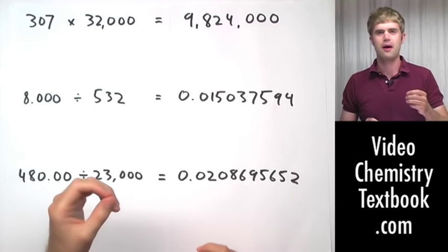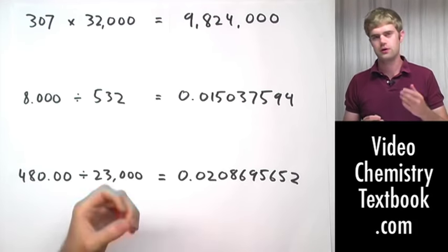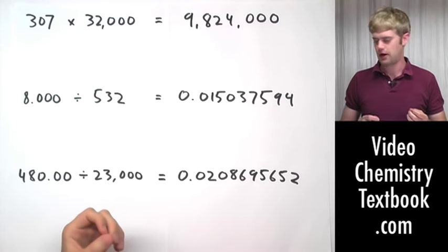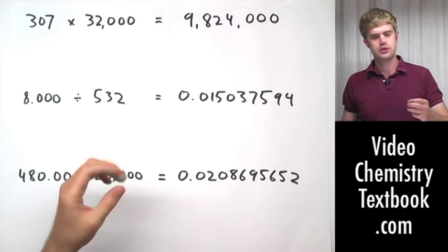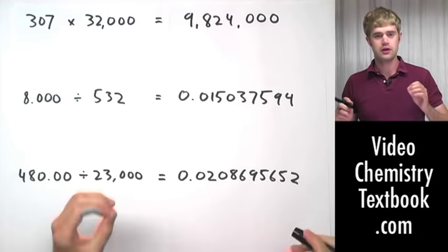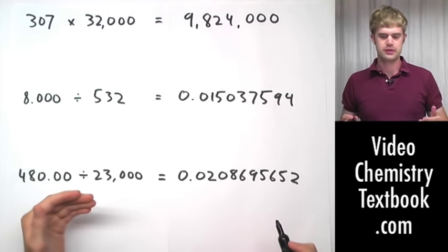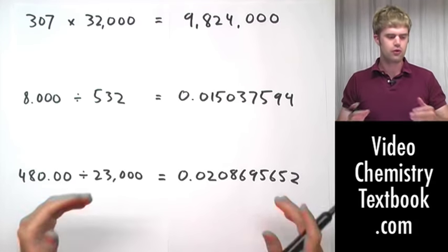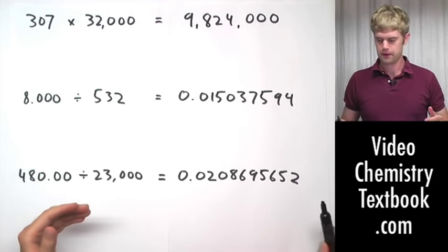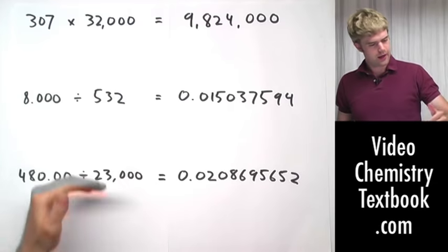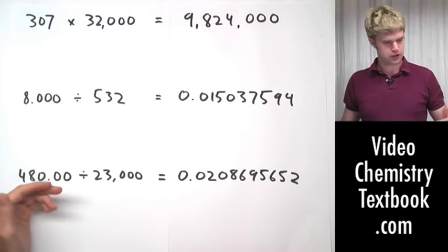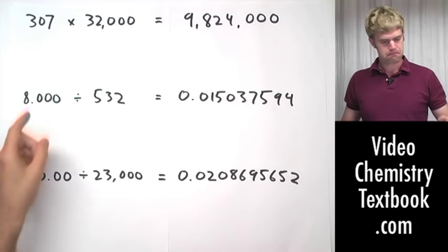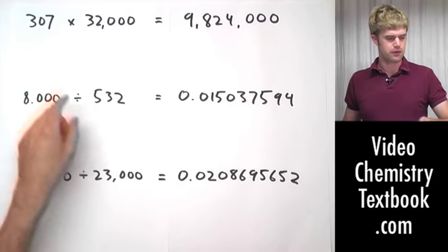Now that we've learned the rules about how to tell whether zero is significant or not, let's take a look at calculations involving numbers with zeros in them. We'll go through this really quickly. I've got a couple of multiplication and division problems here. Let's go through them.